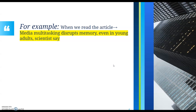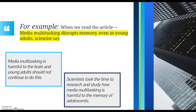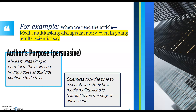The second article is 'Media Multitasking Disrupts Memory Even in Young Adults, Scientists Say.' You have two examples: the first is 'Media multitasking is harmful to the brain and young adults should not continue to do this' — that is the author's purpose. Based off everything you read, you're thinking we should definitely stop media multitasking, but that is not the main idea. The main idea needs to not really take a stance: 'Scientists took the time to research and study how media multitasking is harmful to the memory of adolescents.' That would be your main idea.